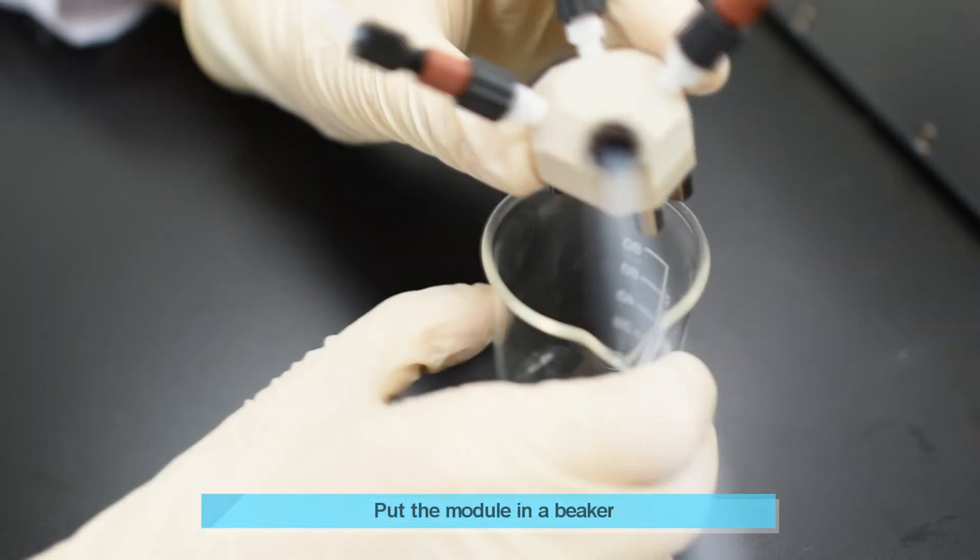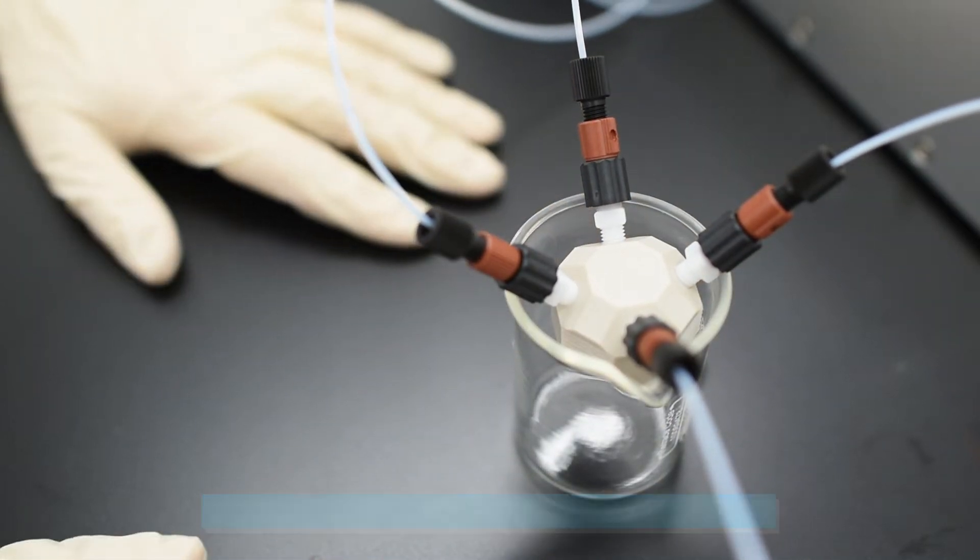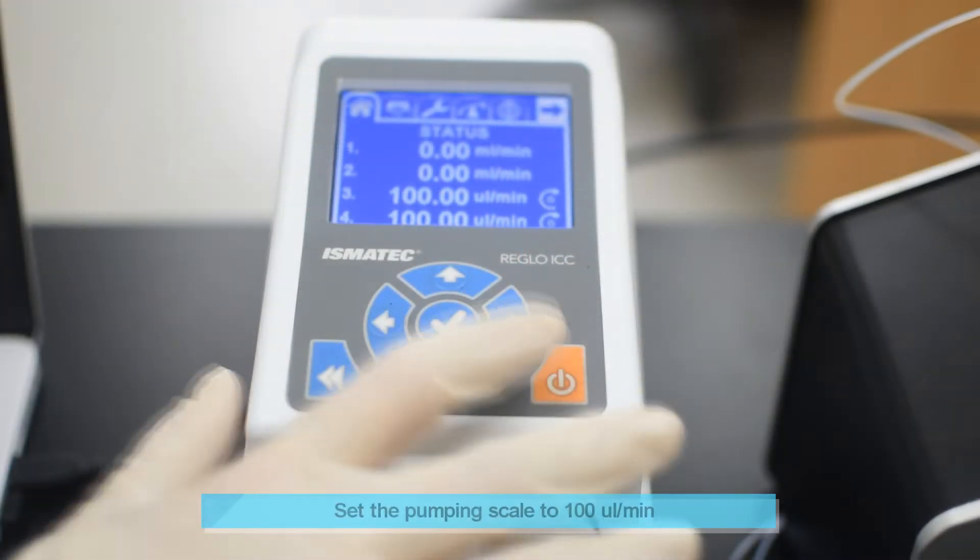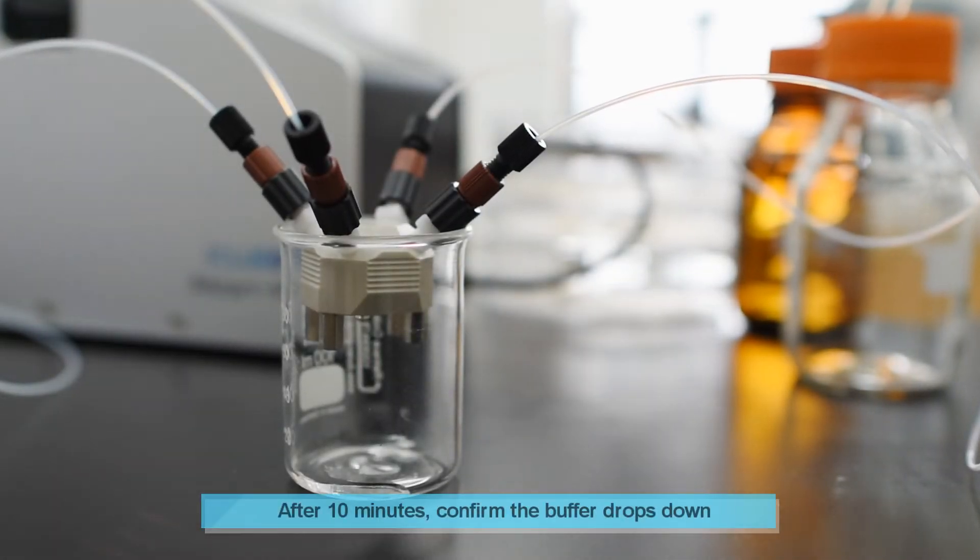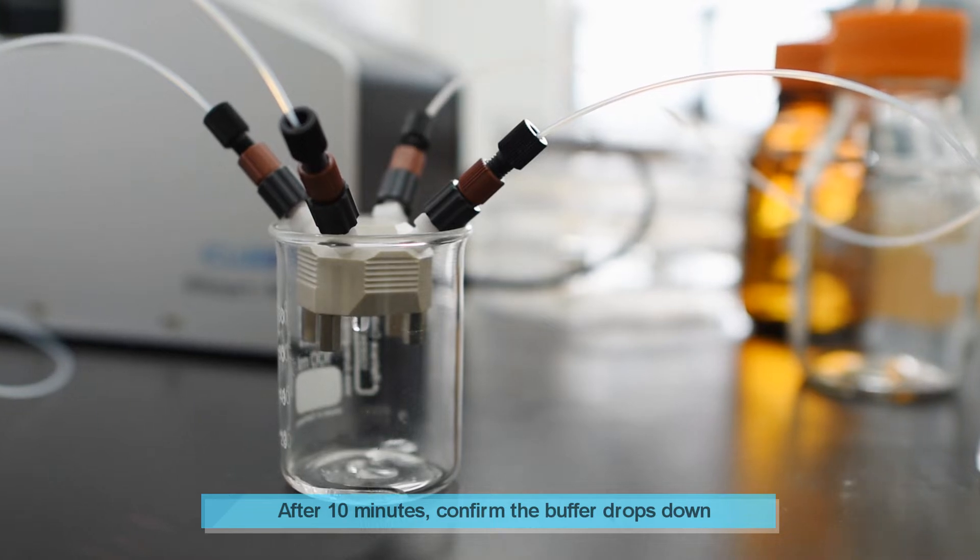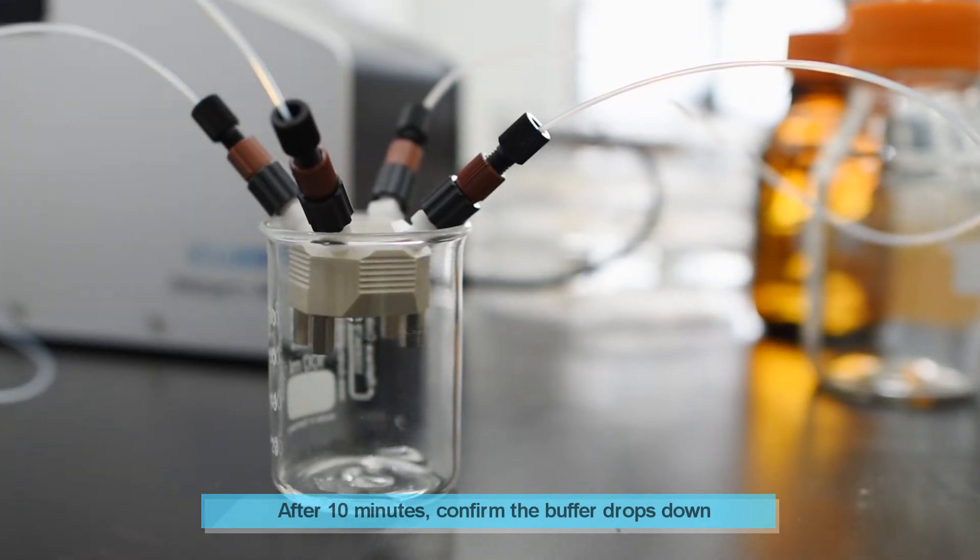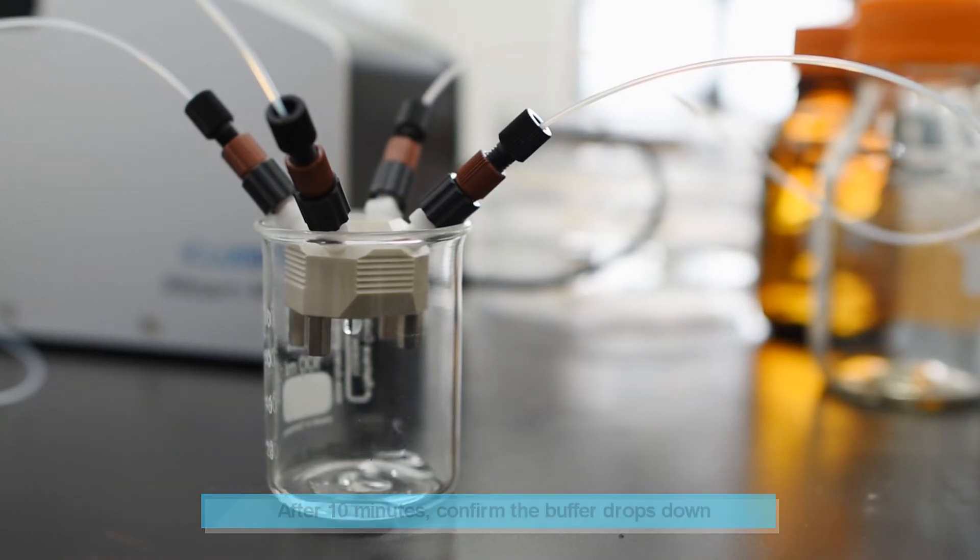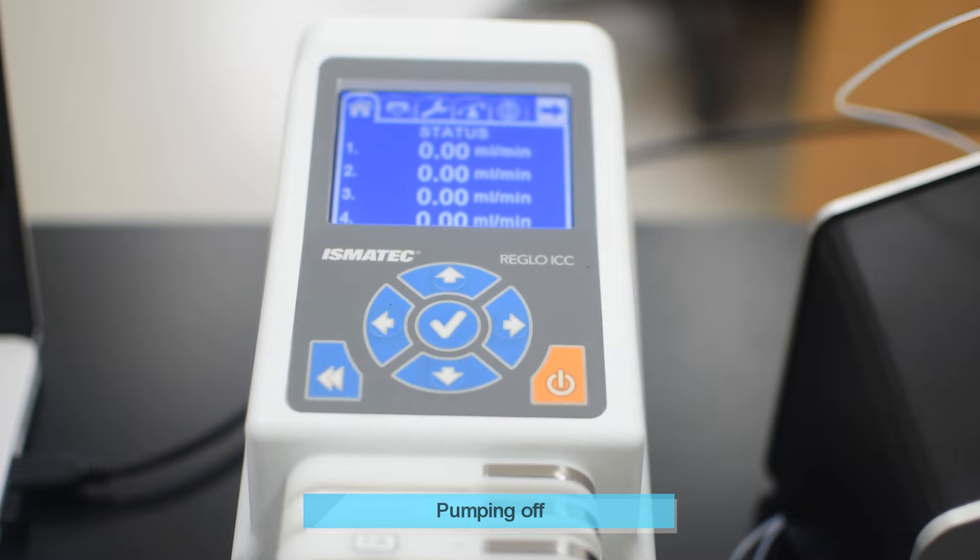Place the fluidic module in an empty beaker. Turn on the pump with a flow rate of 100 µL per minute for 10 minutes to fill the tubings and the fluidic module with running buffer. Check if the buffer can flow out of the fluidic module. If the correct connection is confirmed, turn off the pump. If not, check the connection between the fluidic fittings and fluidic module.